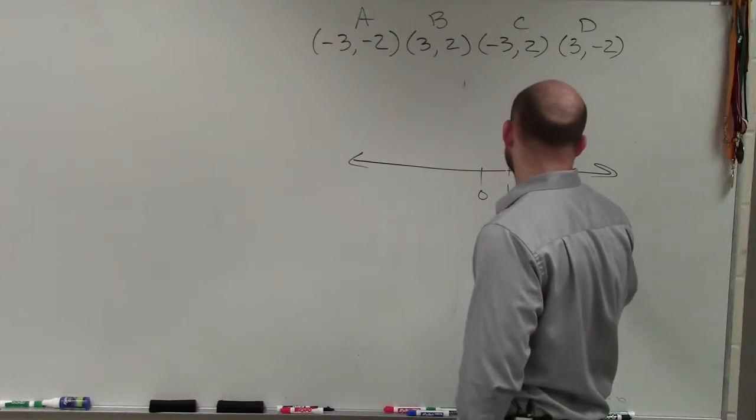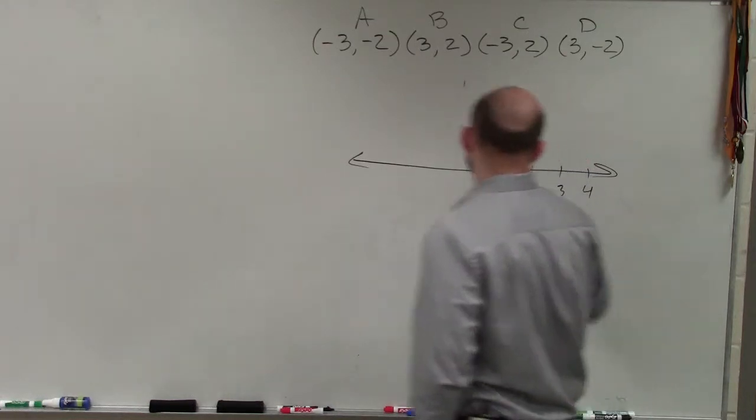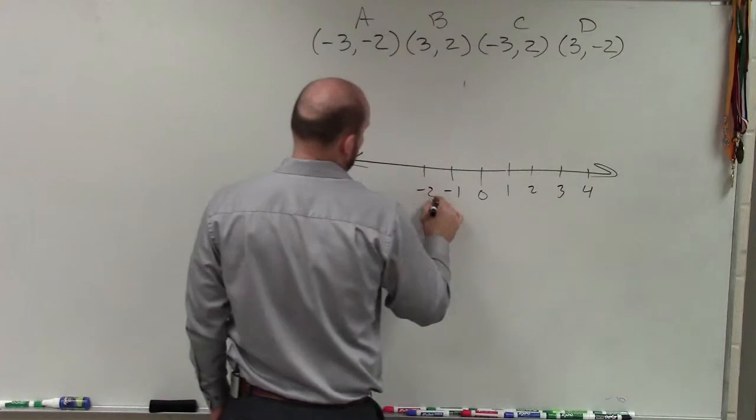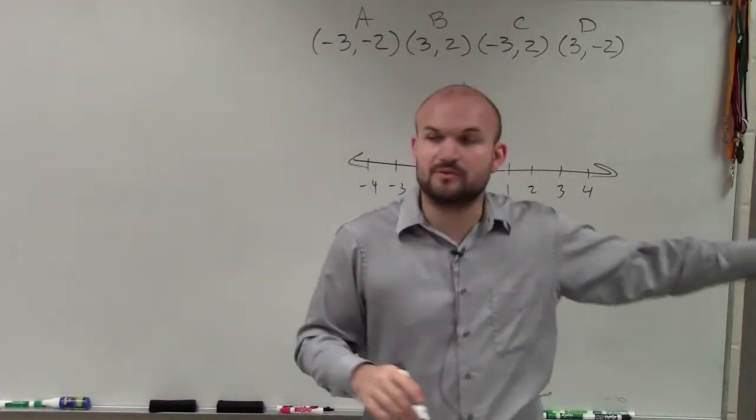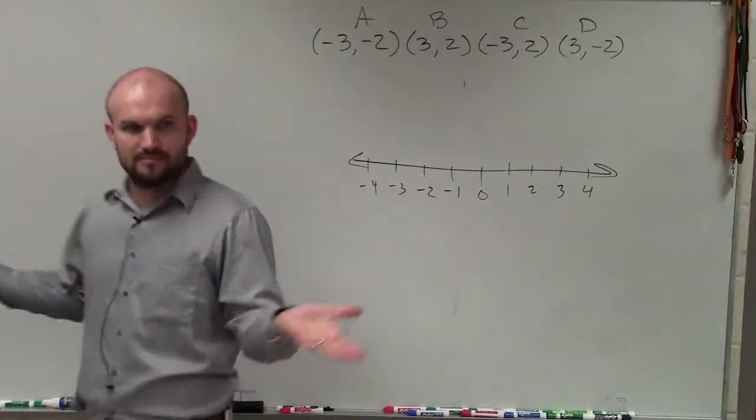And we say, you know, let's say here's 0, 1, 2, 3, 4, negative 1, negative 2, negative 3, negative 4. So positive numbers went to the right, negative numbers went to the left, right? That was a number line.